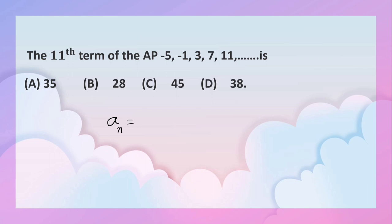a_n is equal to a plus (n minus 1) into d. Here a is negative 5, n is 11.